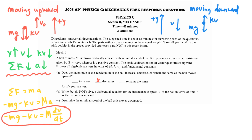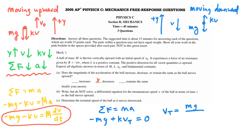Part C asks to determine the terminal speed of the ball as it moves downward. When the ball is moving downward and reaches terminal velocity, the acceleration equals zero. Writing the F equals ma equation: Mg is still negative pointing downward, but kV is positive because air resistance points upward while the ball moves down. Setting the net force equal to zero and solving for terminal speed Vt gives Vt equals Mg divided by k.